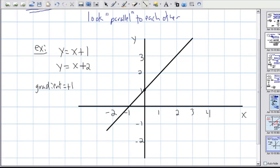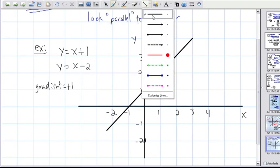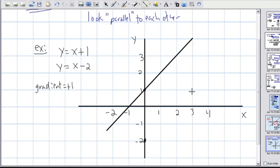What about the second graph? This one has a y-intercept of negative 2. So I need to draw a point down here at negative 2. But it still has a gradient of plus 1, which means I go 1 right, up 1. And if you can see, these two lines look parallel. They should.